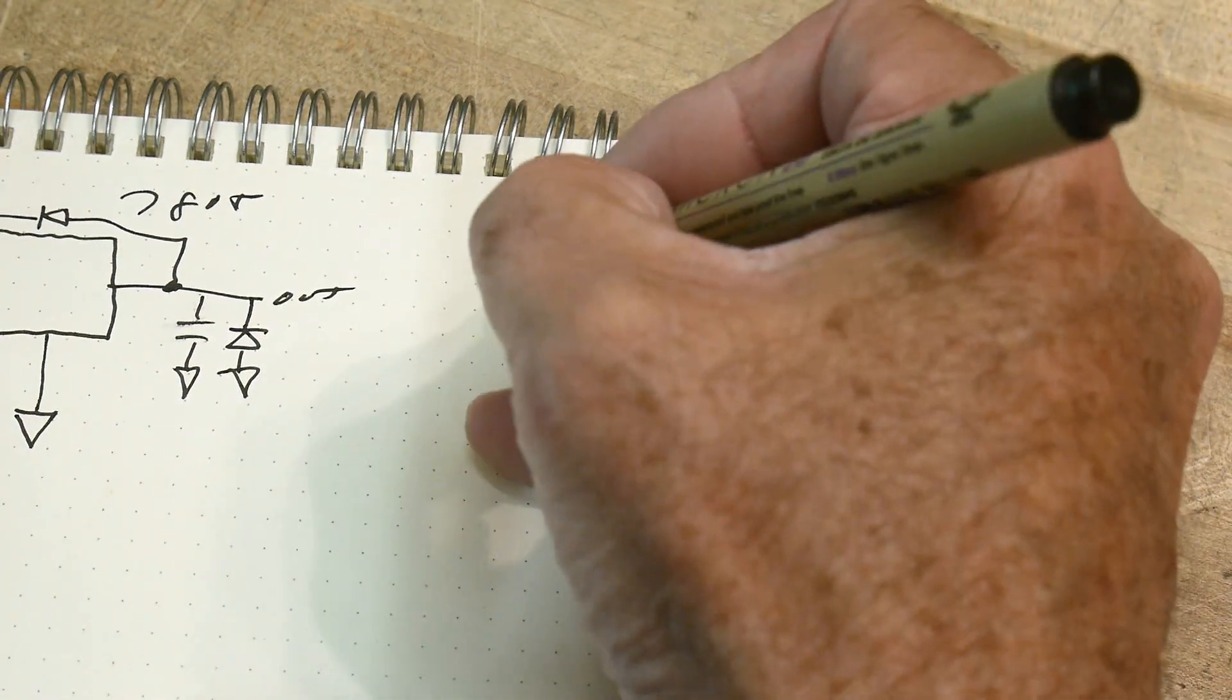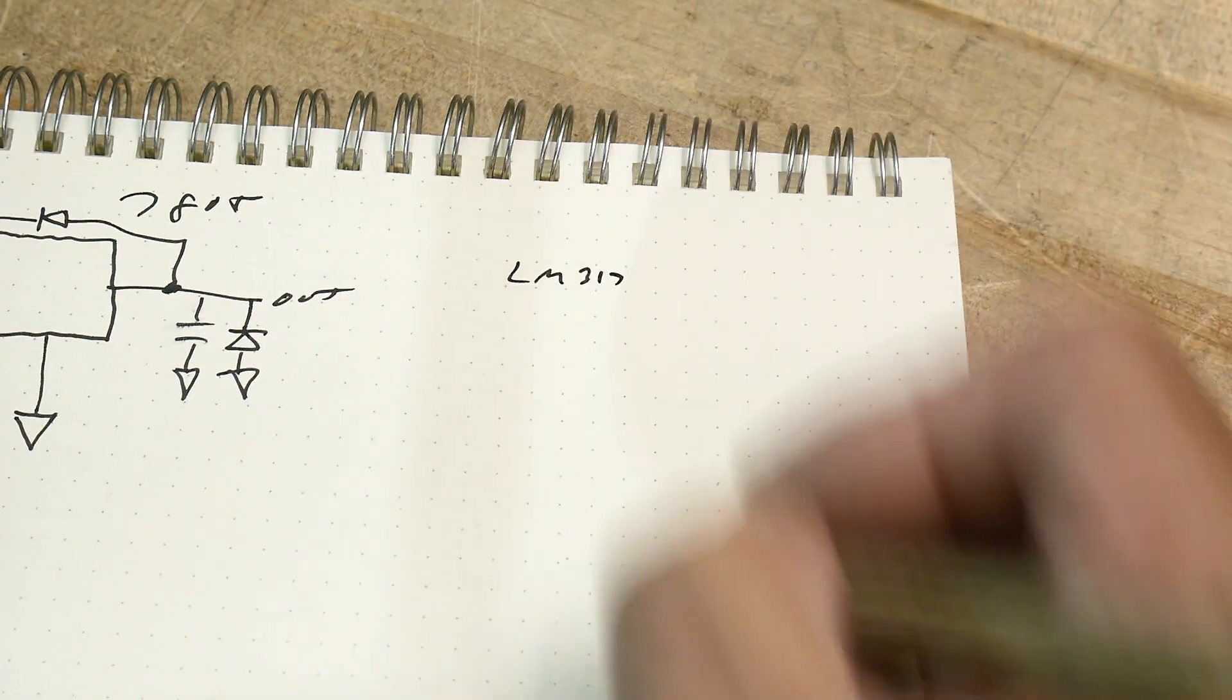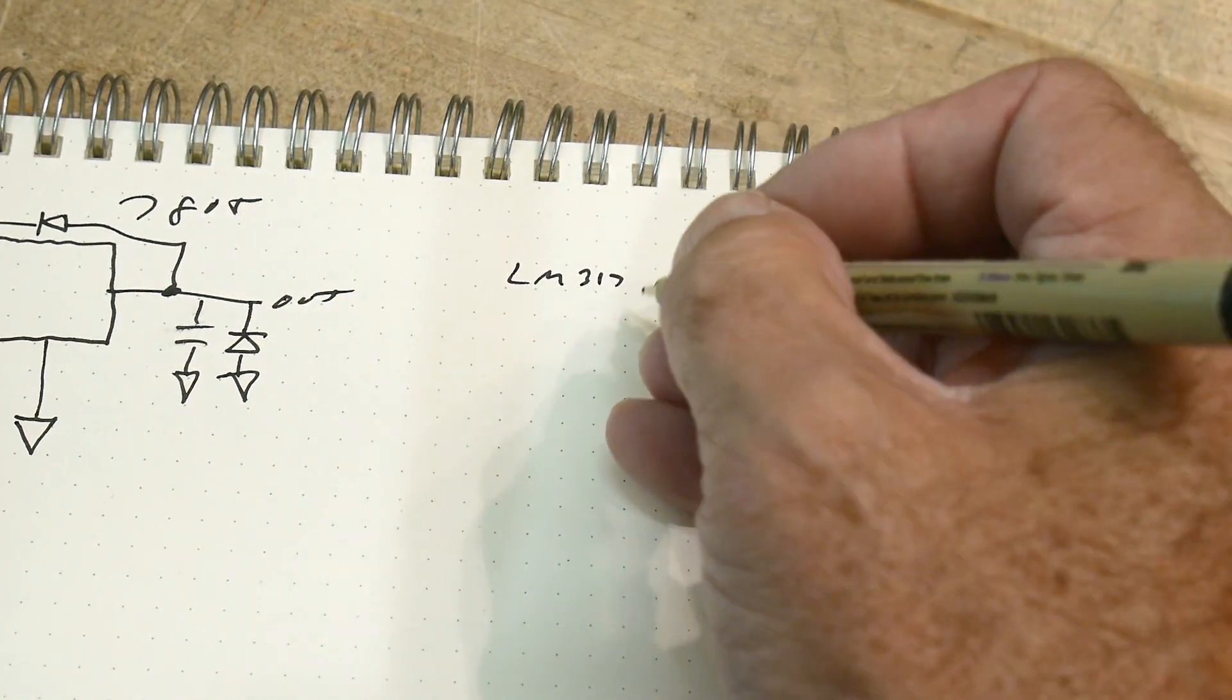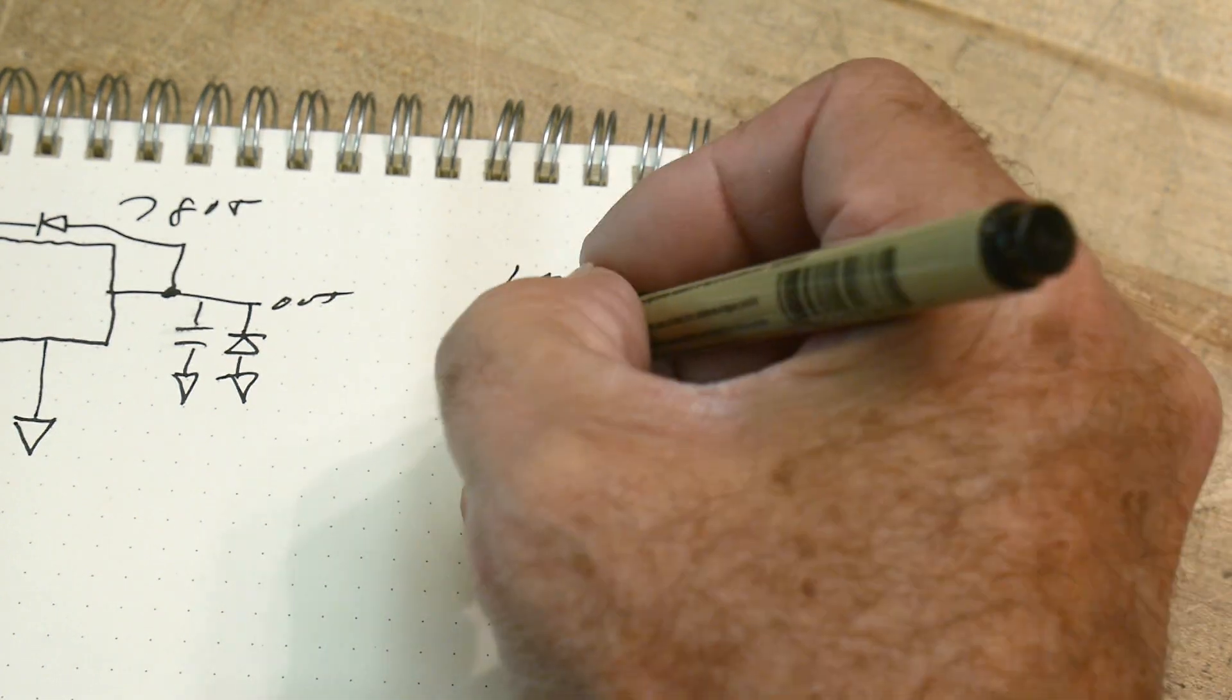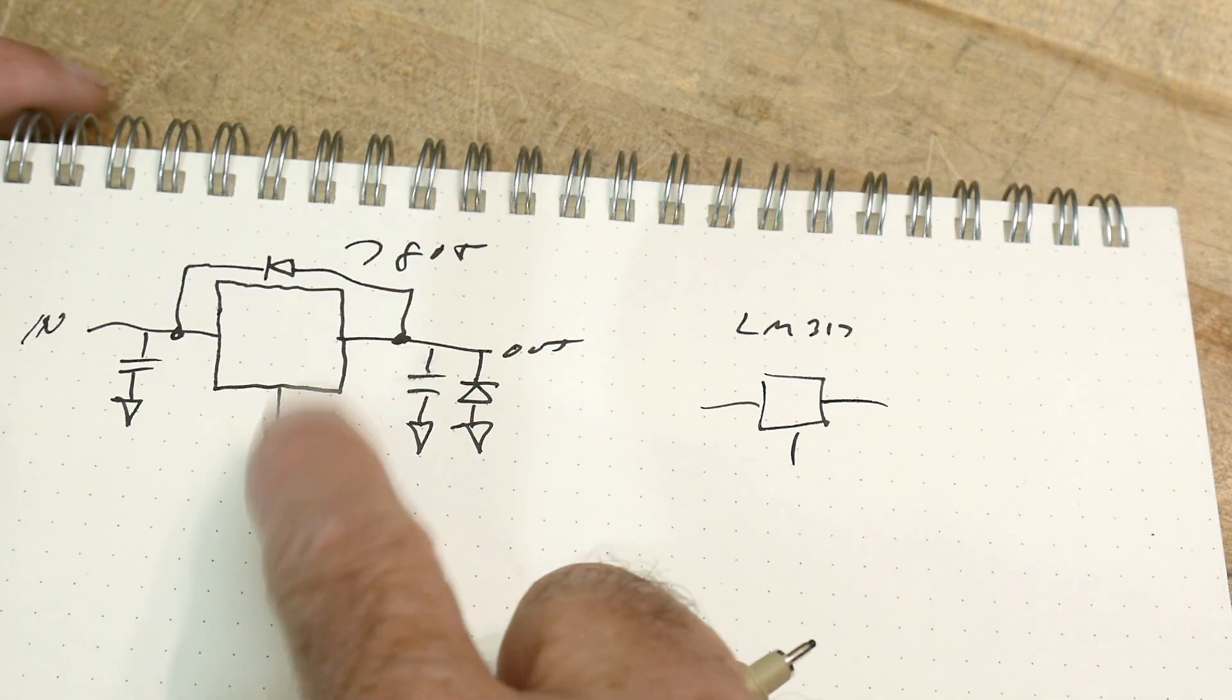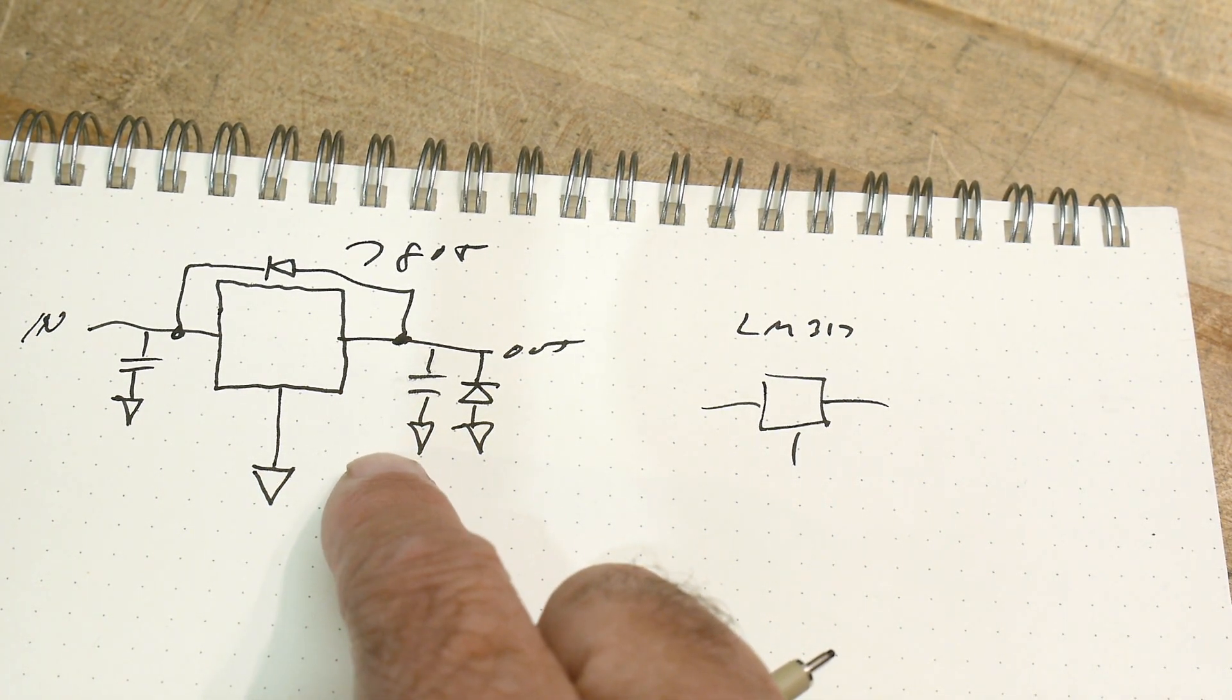So there's a thing called a LM317. And if you hook it up just like this, it'll output 1.25 volts. So it's basically a 1.25 volt regulator.